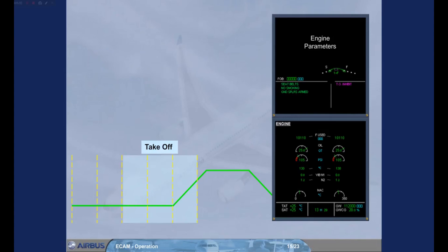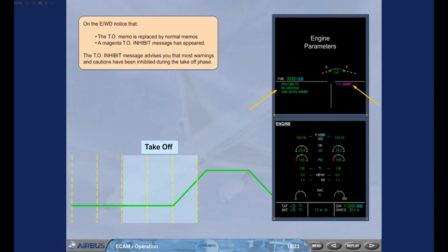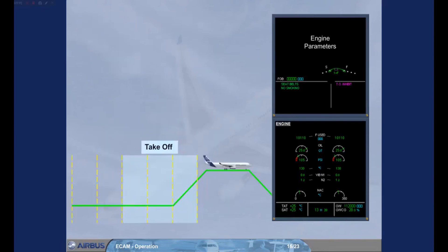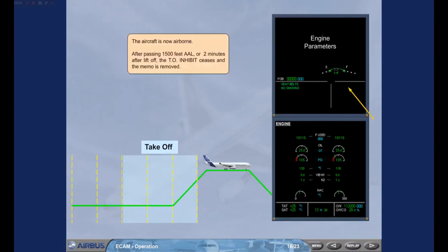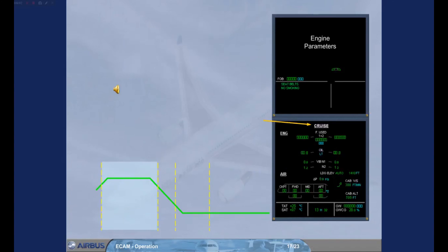On the engine warning display, notice that the takeoff memo is replaced by normal memos, and a magenta takeoff inhibit message has appeared. The takeoff inhibit message advises you that most warnings and cautions have been inhibited during the takeoff phase. At level, or two minutes after liftoff, the takeoff inhibit ceases and the memo is removed. The ECAM cruise page then automatically replaces the engine page when the aircraft is in phase 6 and takeoff power is not maintained.